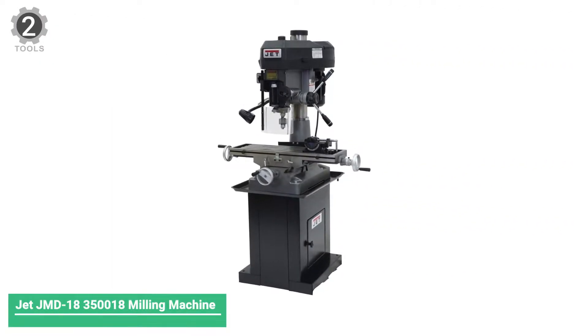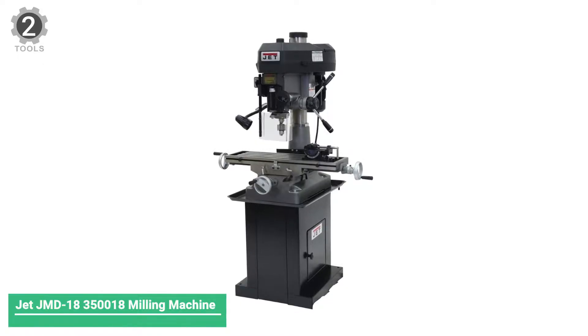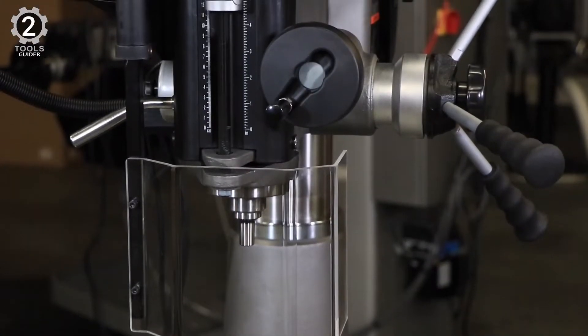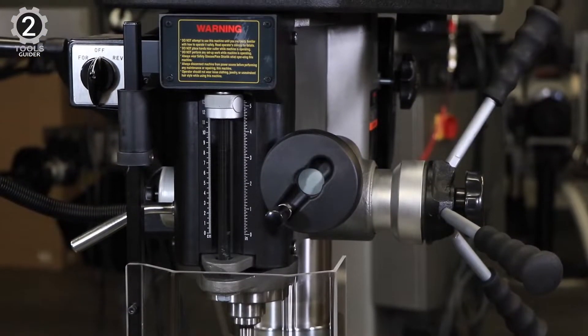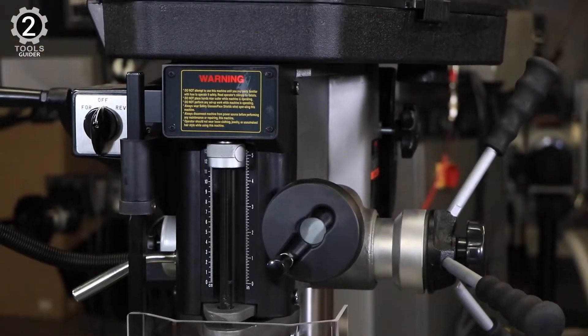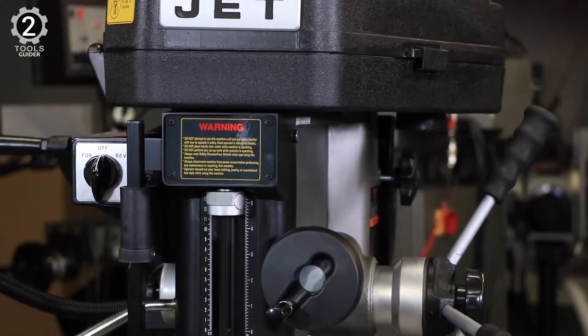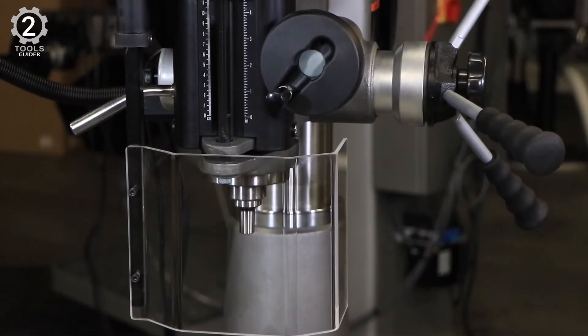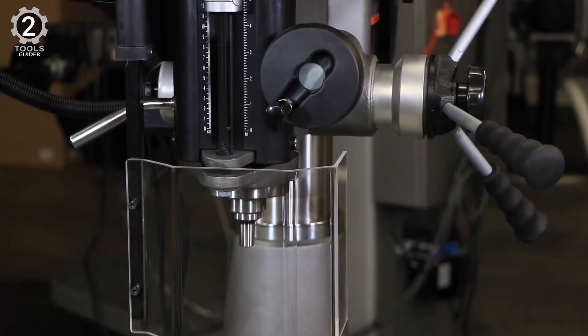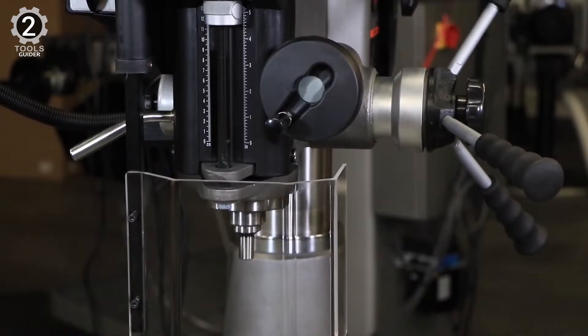Number 2. Jet JMD 18 350 018 Milling Machine. The Jet JMD 18 Mill Drill with R8 Taper is a lighter alternative to a heavy milling machine. It functions primarily for milling and not so much as a drill press. It offers a combined belt-driven drill press with dual coordinate abilities of the milling machine's work table, delivering flexibility and efficiency.